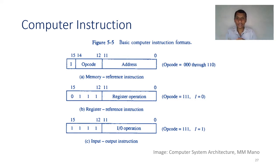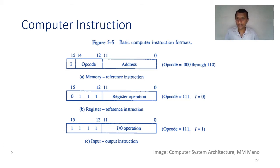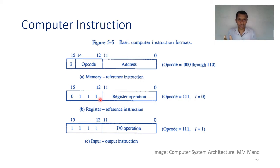Another format is the register reference instruction. Here there is no memory referencing. The 12 bits from bit 0 to bit 11 can be used to indicate the instruction. We fix the opcode part to a constant value so it indicates one category of instruction, and the operand part indicates which operation and which registers are involved. For register reference instructions, we fix the opcode to 0111, that is 7.